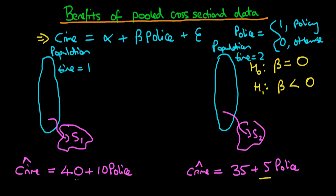Notice that the effect of being a city which in the future introduces this policing policy is 10, whereas after this policy is introduced the effect is only to increment crime by 5 cases per 100,000. So it looks like the gap between those cities which didn't institute the policy and those who did has decreased over time, which might actually be indicative of the fact that this policing policy has had some sort of effect.